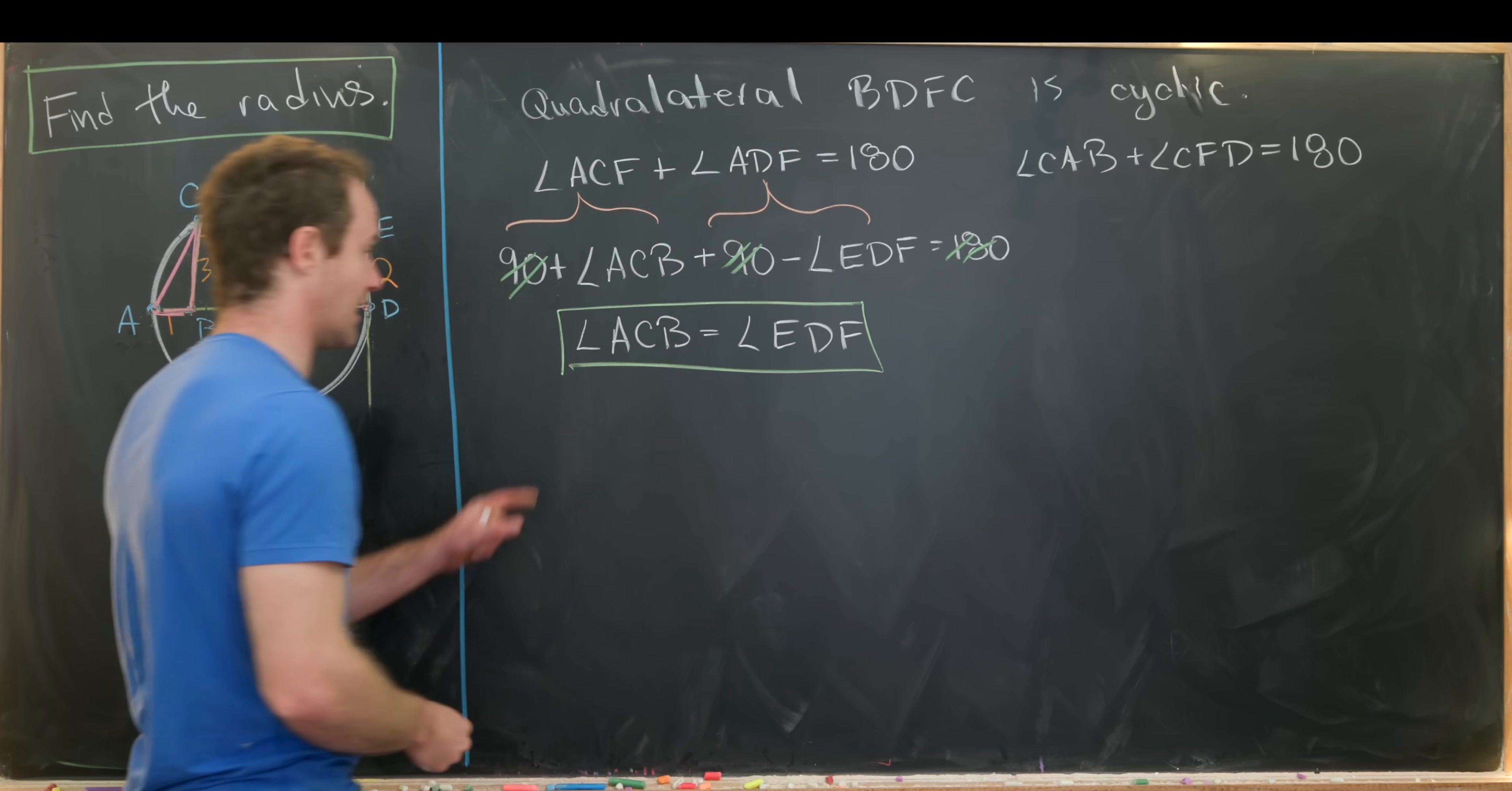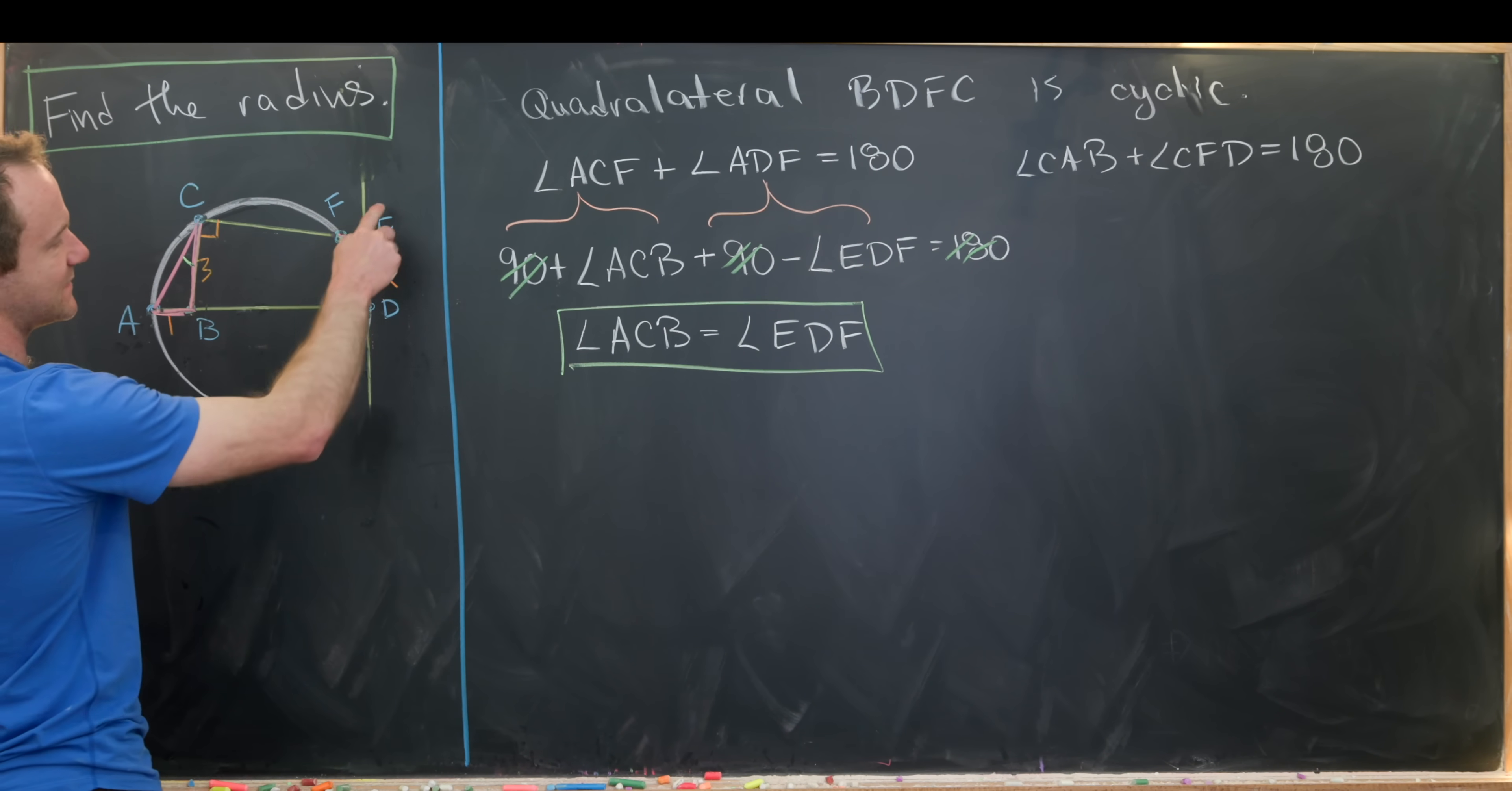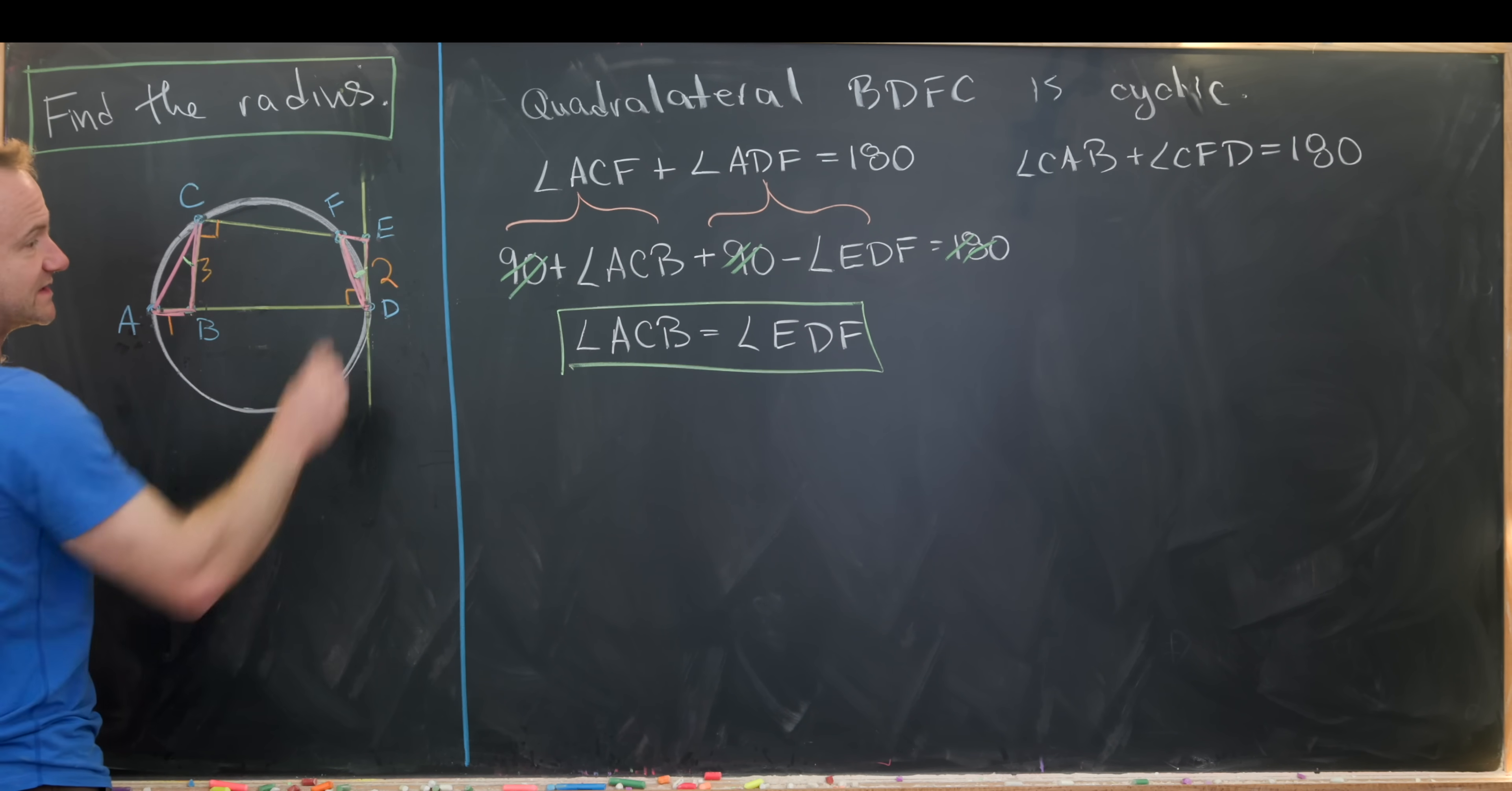So let's put a box around that and save it. And then maybe we'll draw that in our picture here. So ACB, that would be this angle right here, has the same thing as EDF, so that's this angle right here.